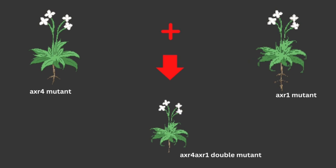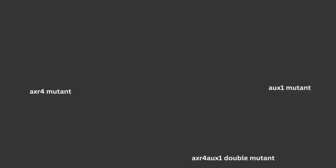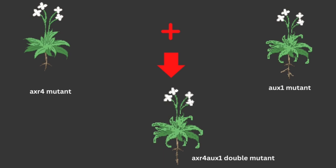Hence, it was concluded that AXR4 and AXR1 interact in such a way that their combined effect is greater than the sum of their individual effects. The AXR4/AUX1 double mutant plants form fewer lateral roots than either of the parent mutants and are resistant to auxins, just like the AUX1 parent. The AXR4/AUX1 double mutant has an additive effect on lateral root formation. Hence, the AXR4/AUX1 double mutant is less resistant to auxin than the AXR4/AXR1 double mutant.